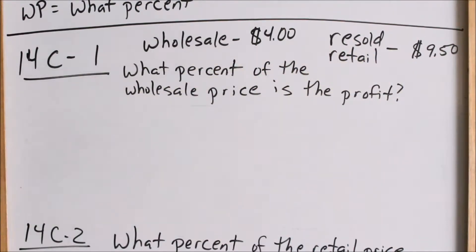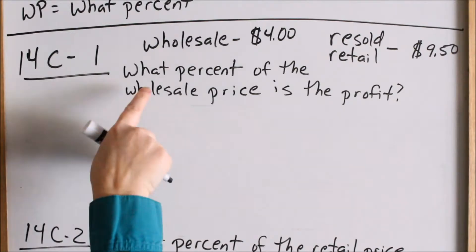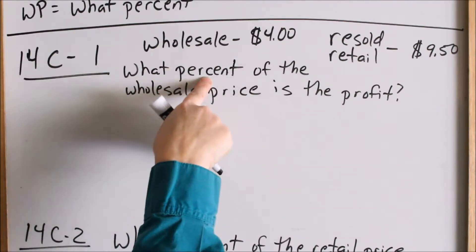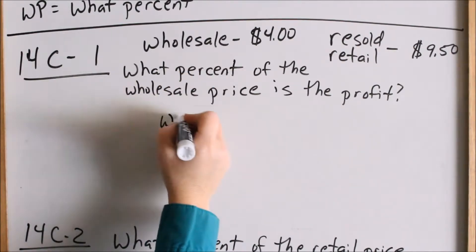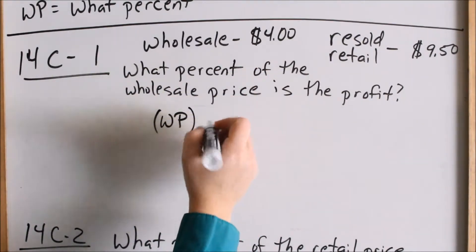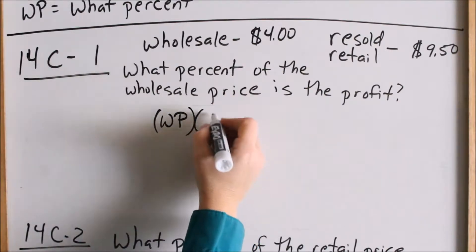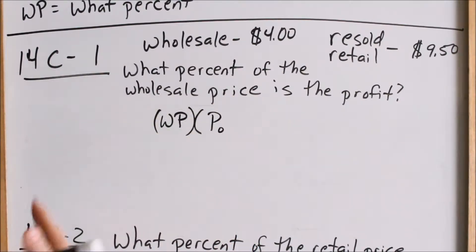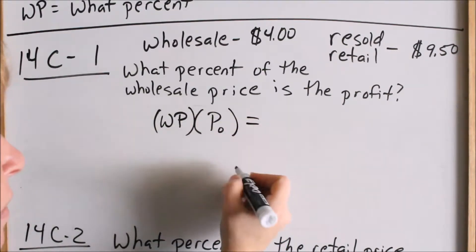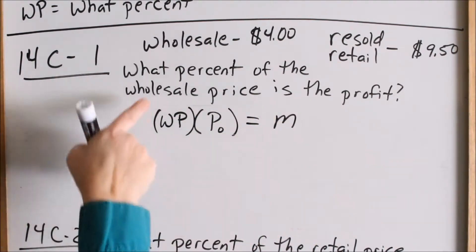You can figure these out logically, but I'll show you how to turn the words into an equation, one word at a time. 'What percent' — we use WP. 'Of' in math means times. 'The wholesale price' — that's P sub O, the original price. 'Is the profit' — we use M for markup or profit. So our formula is: WP times P_O equals M. That's going from words to formula — WP is what we're looking for, and it's one variable on its own.